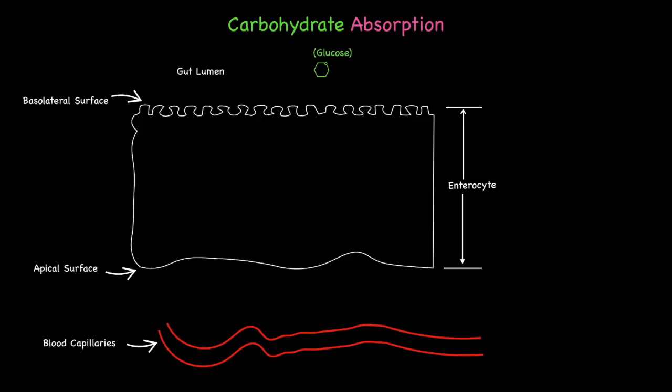This transport process requires three important steps. Step one begins on the apical side of the cell and uses primary active transport in the form of a sodium-potassium pump. This process uses ATP to pump sodium out of the cell and potassium in. Over time, the concentration of sodium within the cell becomes low due to the continual removal of sodium.